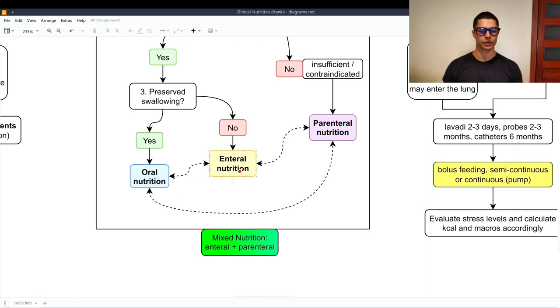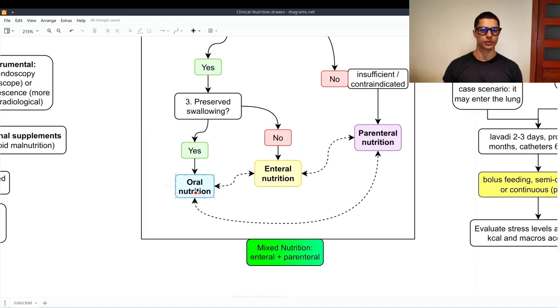And you must know that enteral nutrition and parenteral nutrition together create the mixed artificial nutrition. Oral nutrition is a way of artificial nutrition with supplements to indeed improve the digestion and the absorption of the nutrients to avoid the malnutrition.